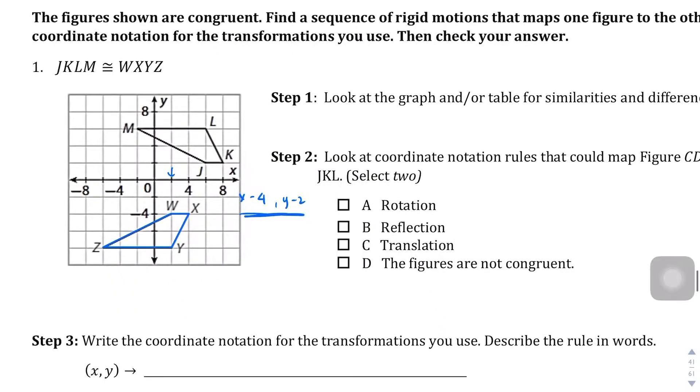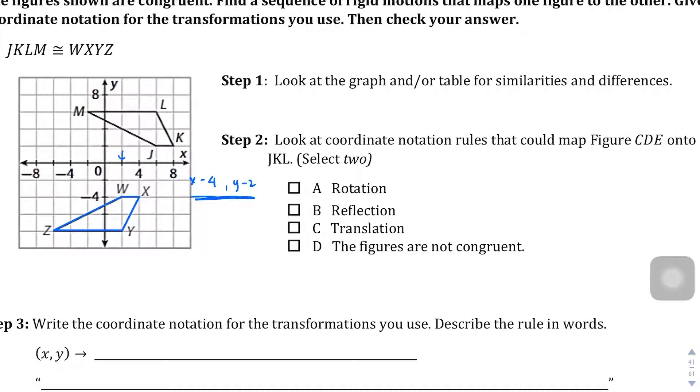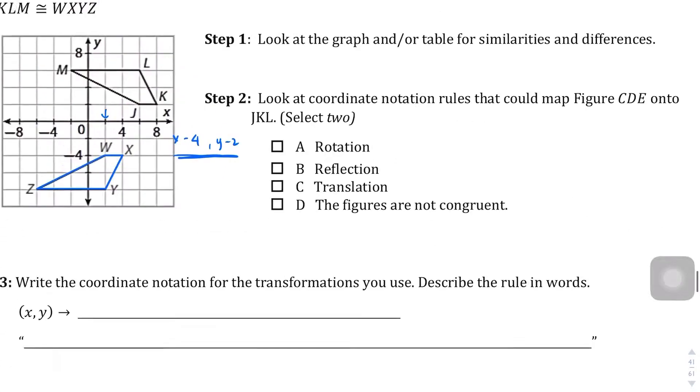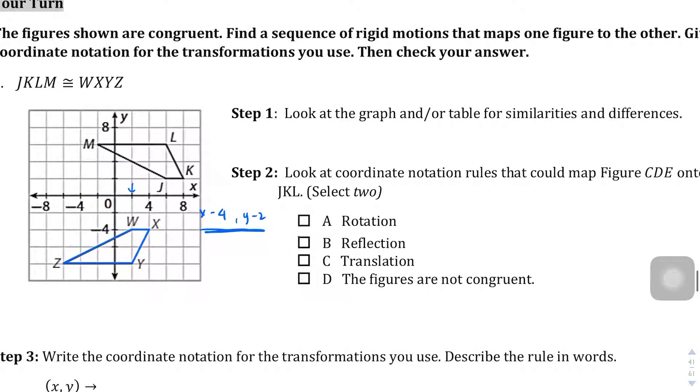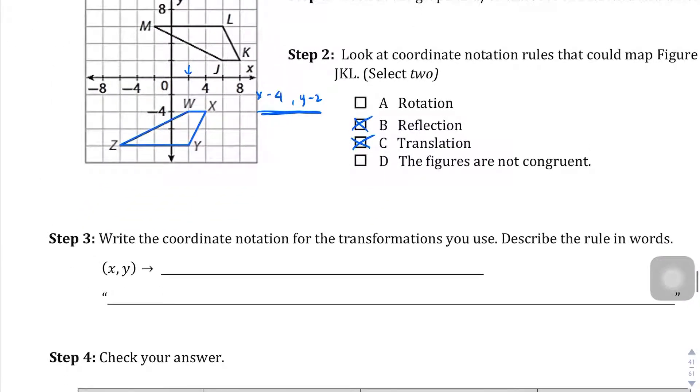It's going to be a reflection and a translation. So, coordinate notation for the transformations you use is going to be a reflection across the X-axis is going to end up looking like this: (x, -y). And then this is also going to map to the translation: (x-4, y-2).